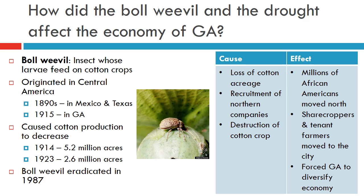Due to the loss of cotton acreage, along with the recruitment of northern companies, millions of African Americans moved to northern cities. In addition, many sharecroppers and tenant farmers — both black and white — left the farms and moved to Georgia cities such as Atlanta and Macon.